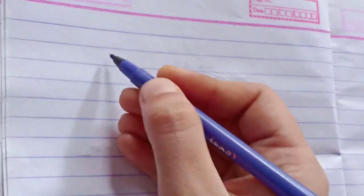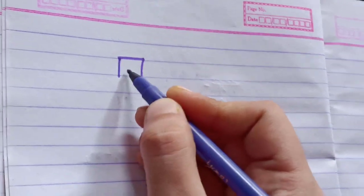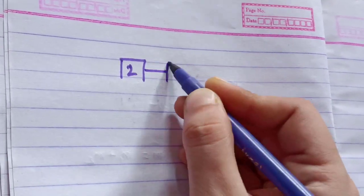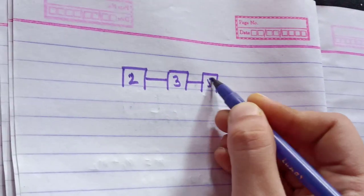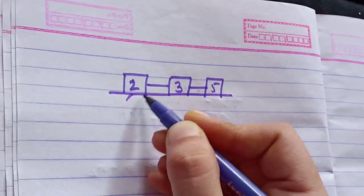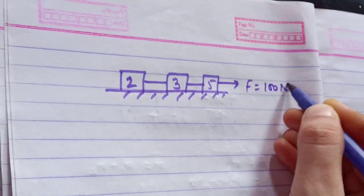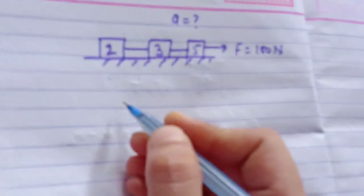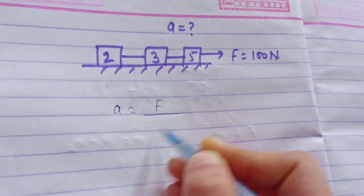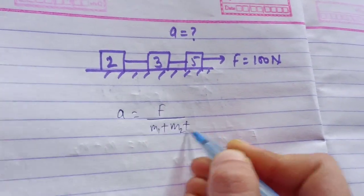I'll tell you by an example. For example, if there are three blocks: 2 kilograms, 3 kilograms, and 5 kilograms, and the force F equals 100 Newtons, then what is the acceleration? We apply our short trick: a equals F divided by (m1 plus m2 plus m3).